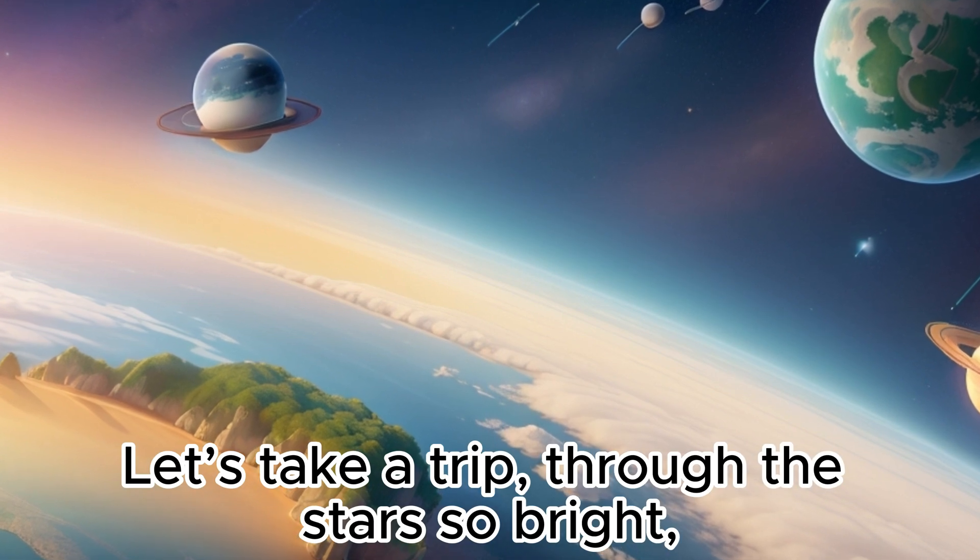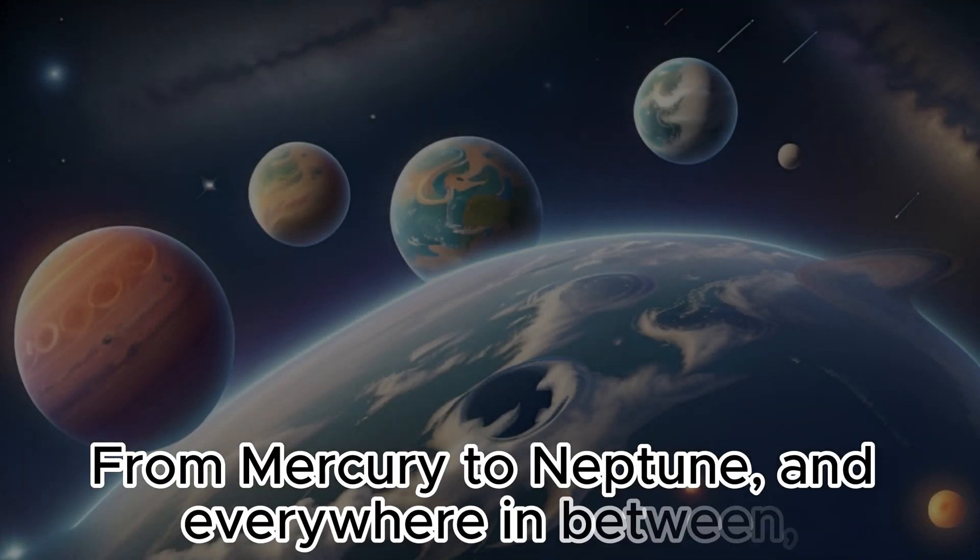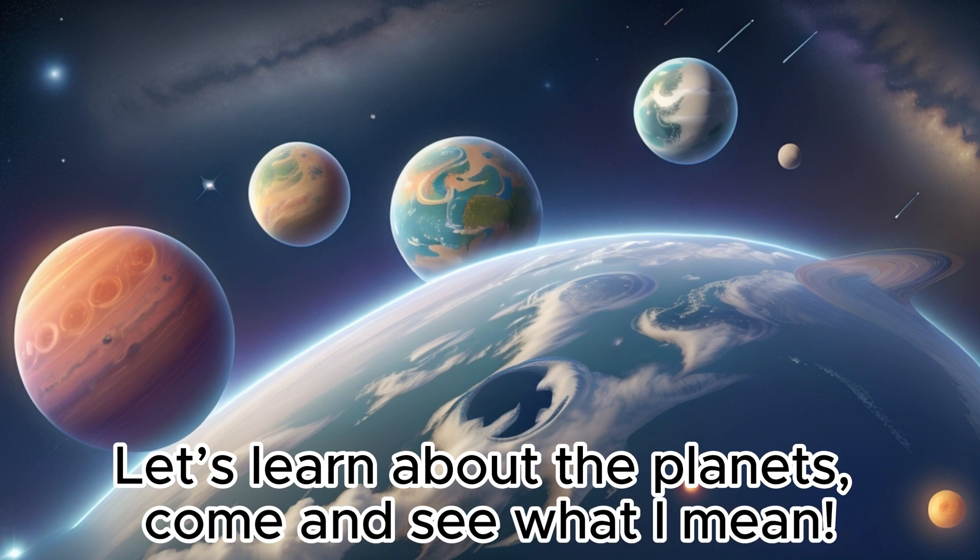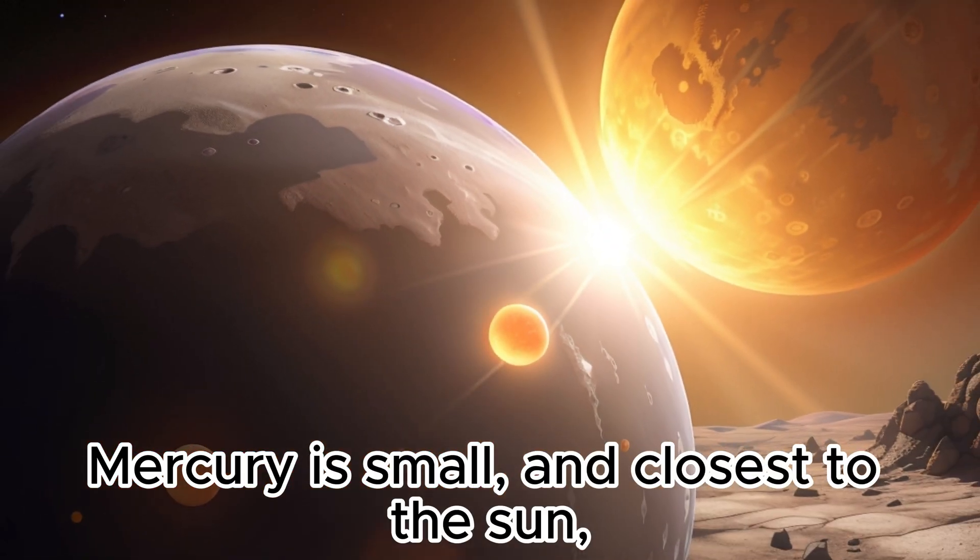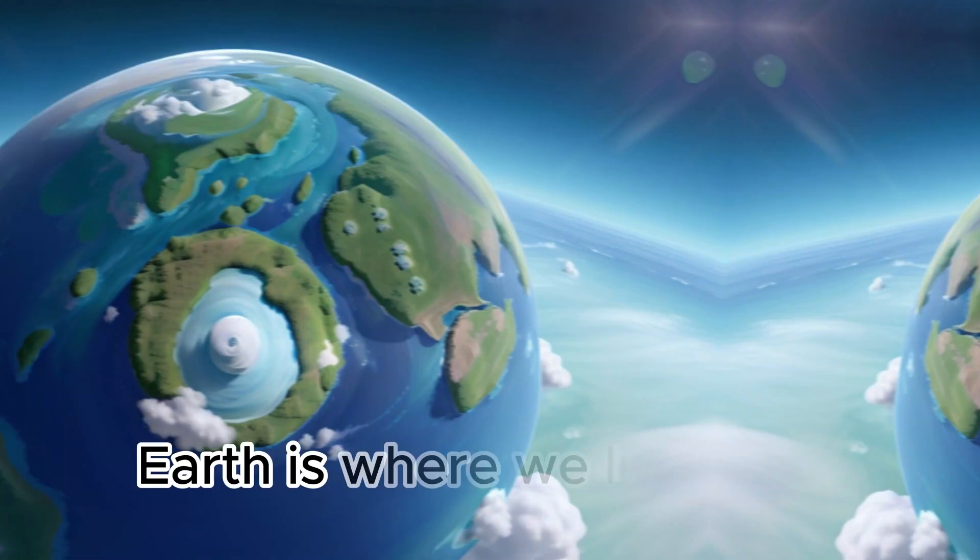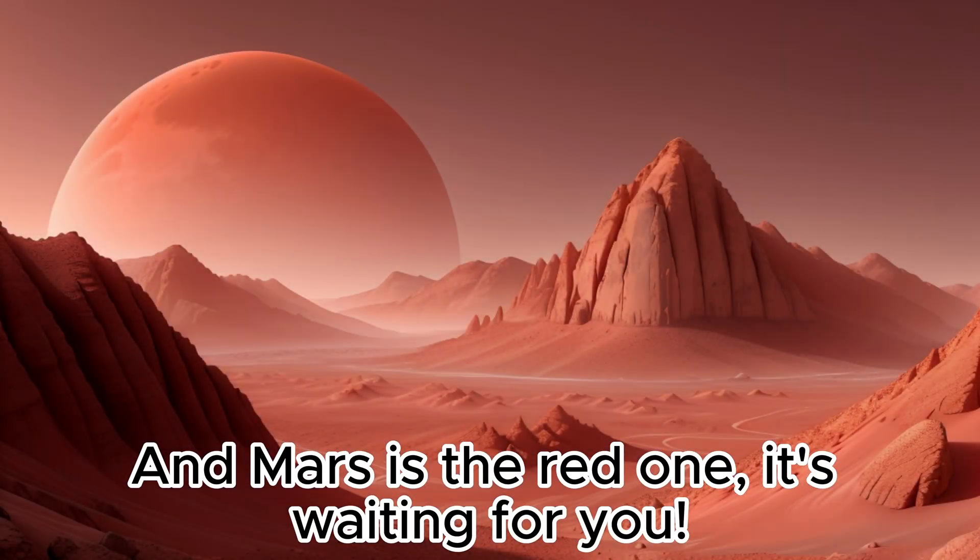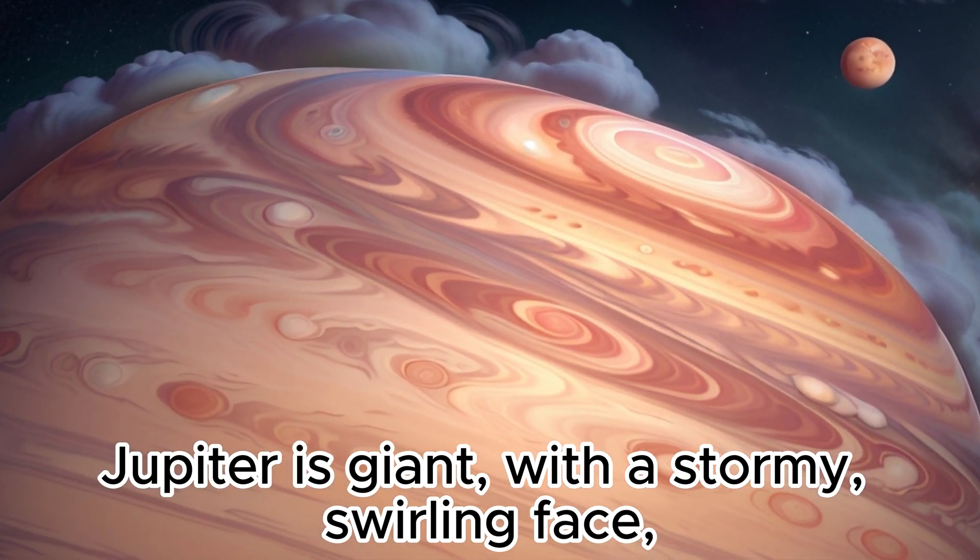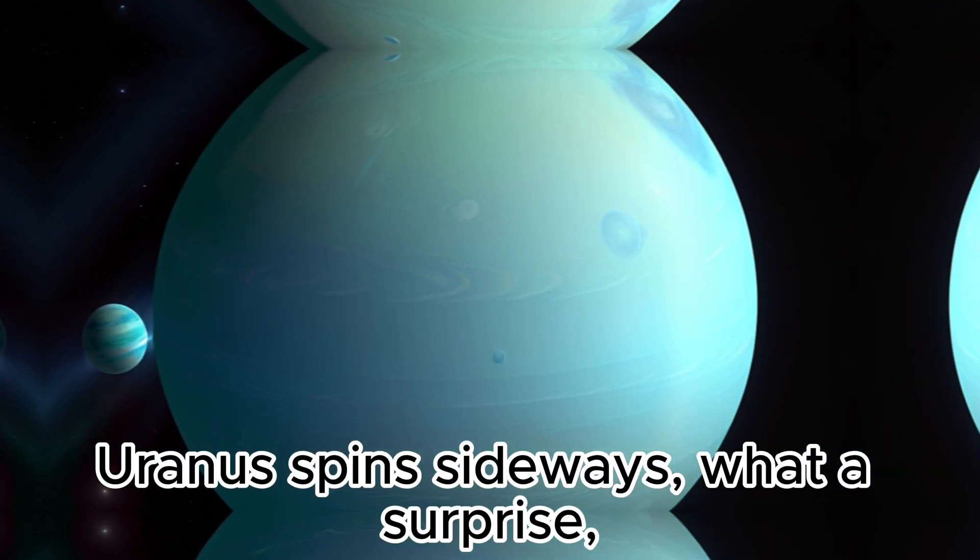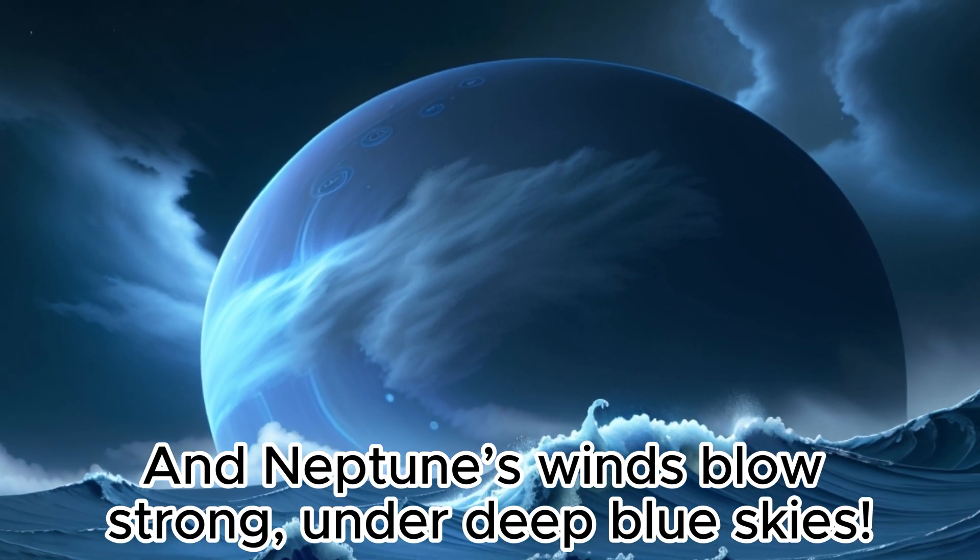Let's take a trip through the stars so bright to visit all the planets, what a sight. From Mercury to Neptune and everywhere in between, let's learn about the planets, come and see what I mean. Mercury is small and closest to the sun. Venus is so hot but so much fun. Earth is where we live, with oceans wide and blue. And Mars is the red one, it's waiting for you. Jupiter is giant with a stormy swirling face. Saturn has its rings floating in outer space. Uranus spins sideways, what a surprise. And Neptune's winds blow strong under deep blue skies.